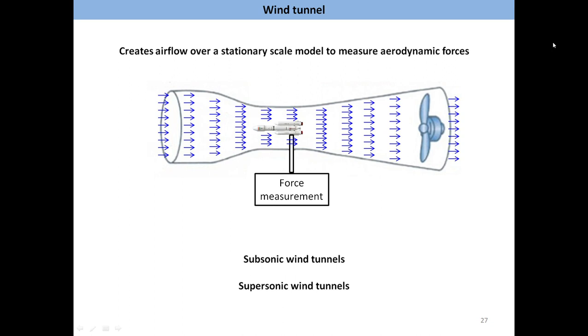A wind tunnel generates winds at very high speeds with the help of huge powerful fans. The scale model of the rocket is kept inside the wind tunnel so that the high speed winds generated by it can flow onto the rocket model. Sensors and other equipment required to measure the resulting aerodynamic forces on the rocket are also attached appropriately. The aerodynamic characteristics of a rocket can be studied with a setup like this. Wind tunnels that can generate winds faster than the speed of sound are called supersonic wind tunnels while the others are called subsonic wind tunnels.